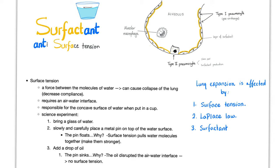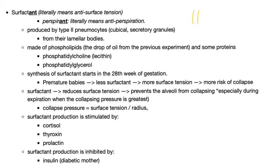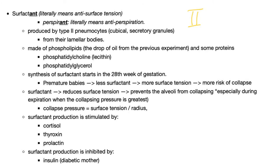Surfactant is anti-surface tension. Surface tension wants the lung to collapse, but surfactant protects and allows breathing. Surface tension is the adhesion between molecules — the same force that lets bugs walk on water. Lung expansion is affected by: (1) surface tension, (2) Laplace's law, and (3) surfactant. Normally, the lung is made of air and water; between them there is surface tension wanting the lung to collapse, but surfactant comes to the rescue. Surfactant is made by type 2 pneumocytes and is composed of phospholipids (phosphatidylcholine and phosphatidylglycerol). It is made around the 28th week of gestation. Insulin decreases surfactant production; cortisol, thyroxine, and prolactin promote it.